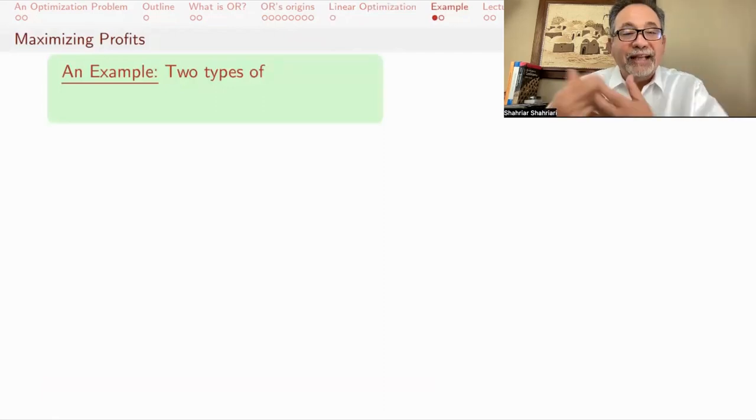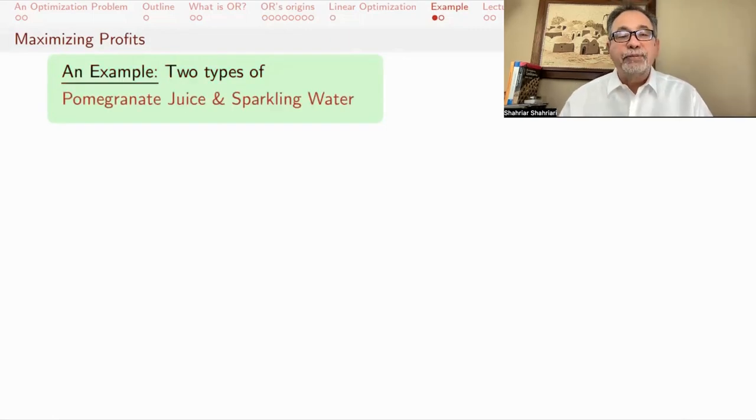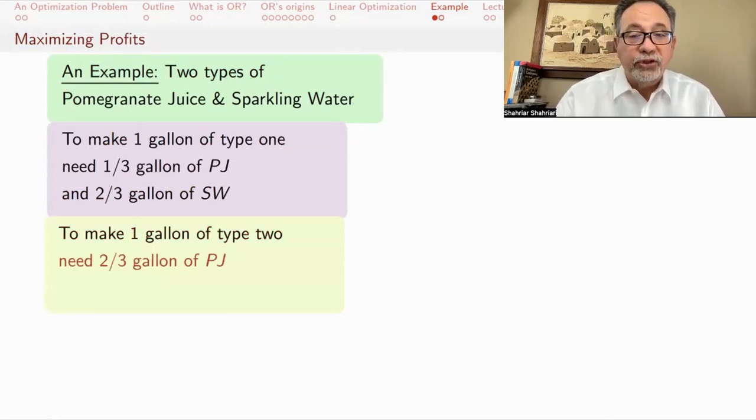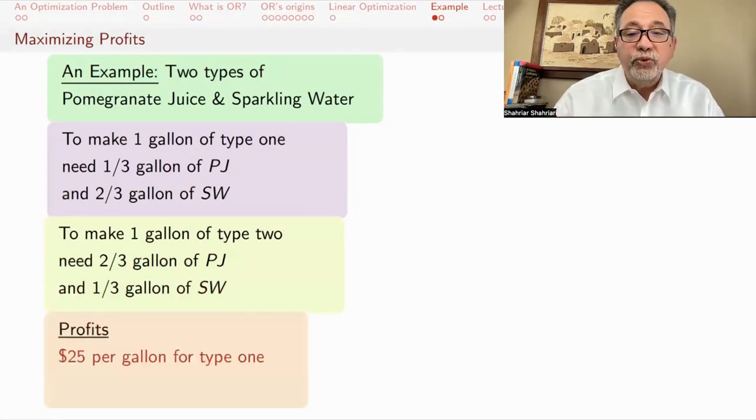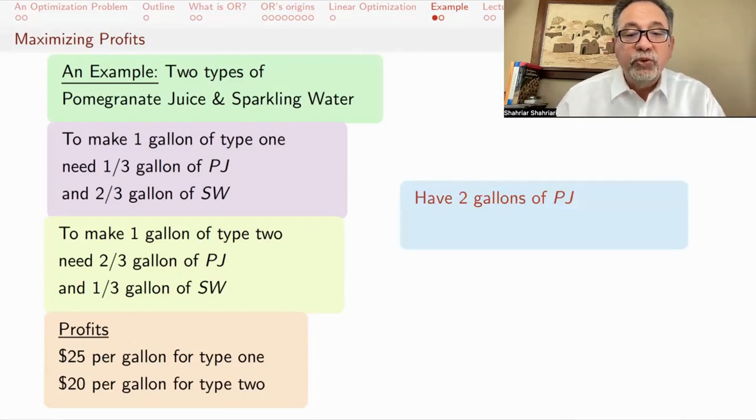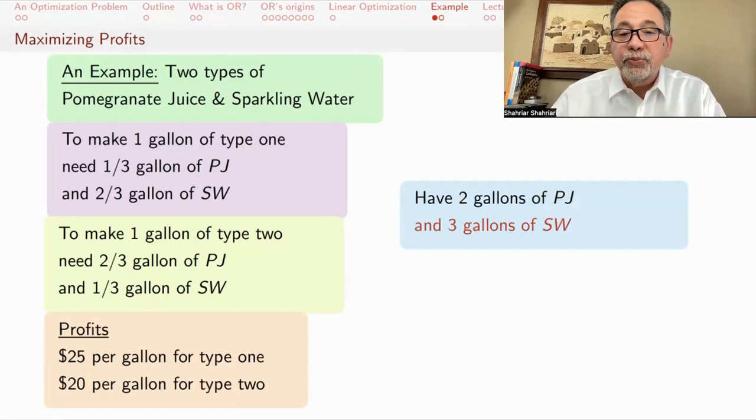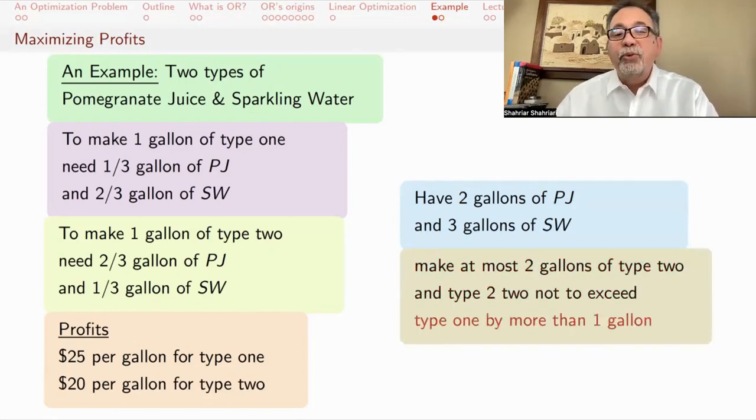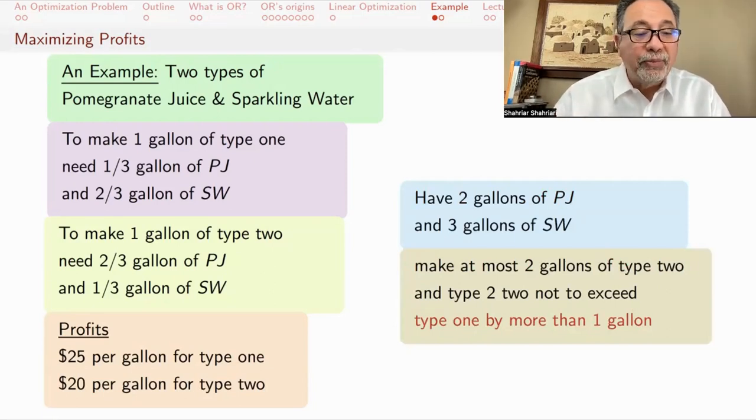An example to illustrate that, in the next video I will solve this problem, but for now I'm just going to give you the problem. You want to make two types of mixed drinks. You're going to mix up pomegranate juice and sparkling water and salad. For the first type, to make one gallon of it, you're going to use one-third gallon of pomegranate and two-thirds gallon of water. For type two, you use more pomegranate, two-thirds of a gallon, and less water. For the first type, you make $25 per gallon of profits. For the second one, you make $20 per gallon of profits. You have two gallons of pomegranate juice and three gallons of sparkling water. You also have other constraints. You want to make at most two gallons of type two, and type two not to exceed type one by more than one gallon. You want to know how much of each type should you make to maximize profits.